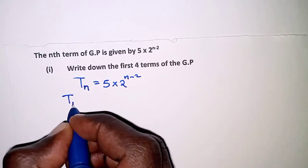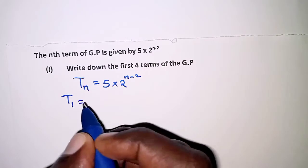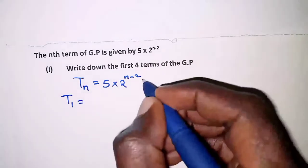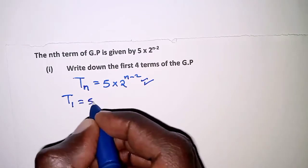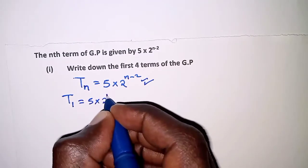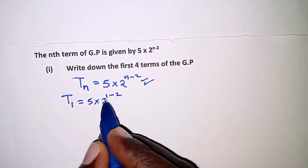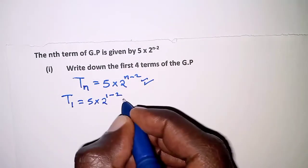implies n is 1, and therefore substituting the values of n in here, we are going to get the first term as 5 × 2^(1-2). So n is 1, and this is going to be